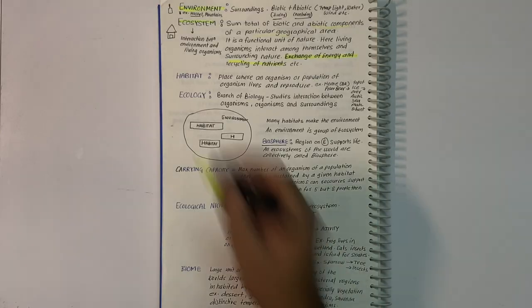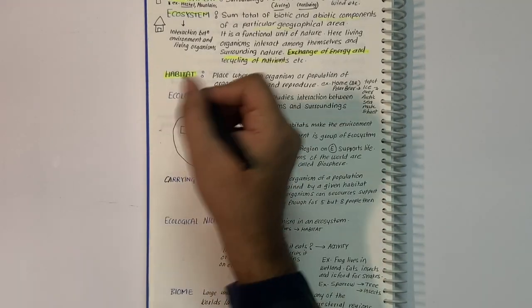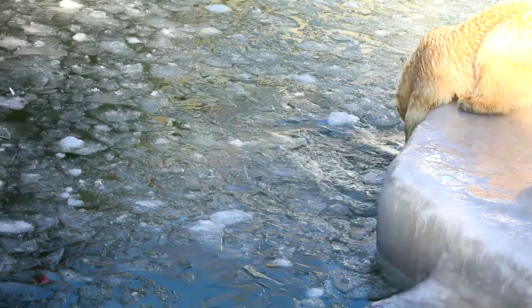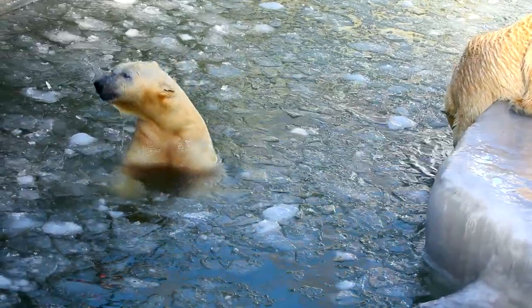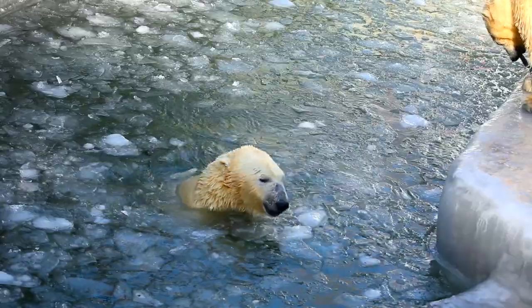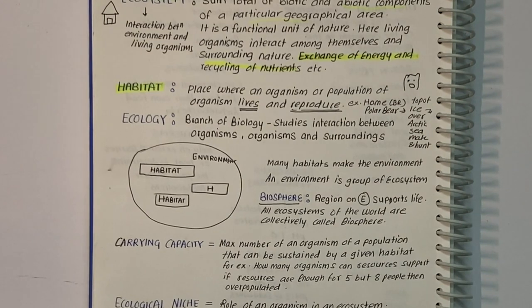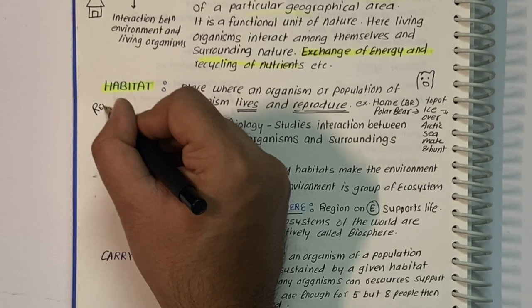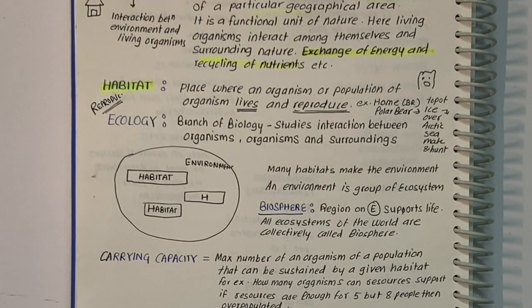Habitat is where an organism or population lives and reproduces. For example, for polar bears, Arctic sea and surrounding glaciers are their habitat. Many habitats combined make an environment. Remember that reproduction is equally important to survival.